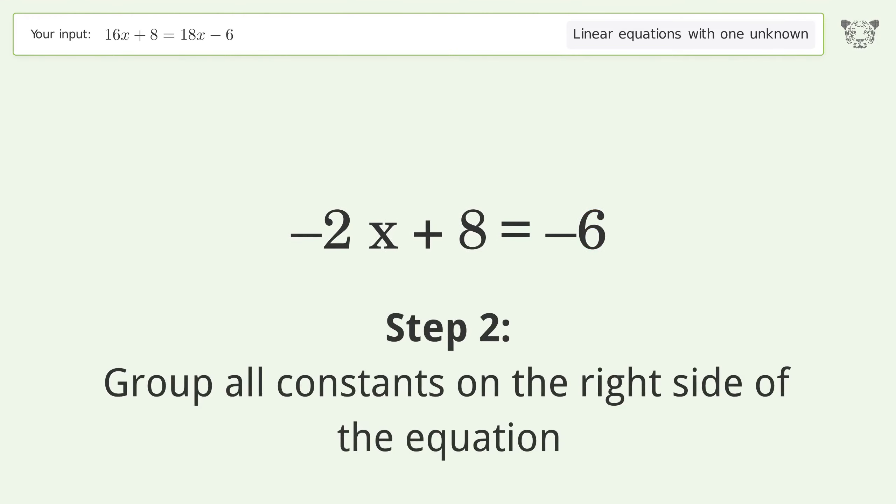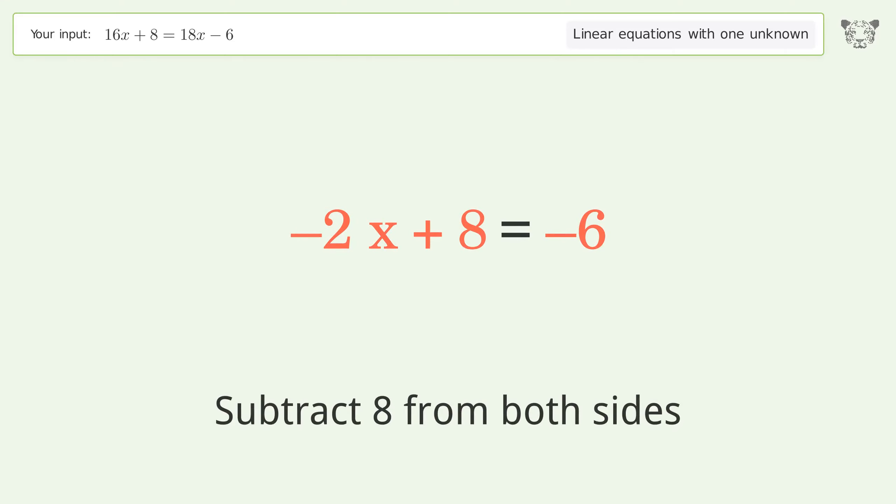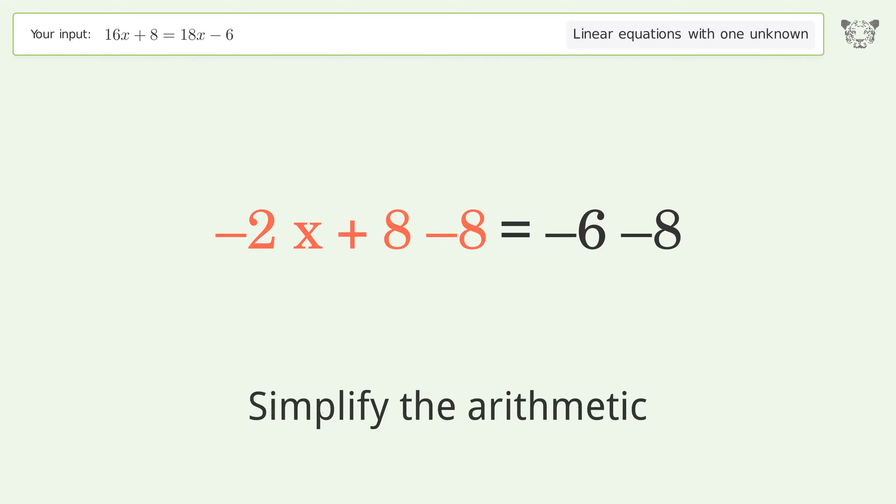Group all constants on the right side of the equation. Subtract 8 from both sides. Simplify the arithmetic.